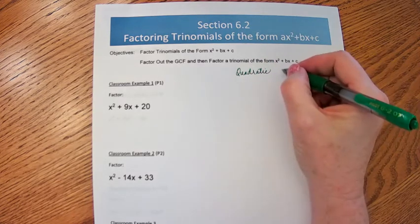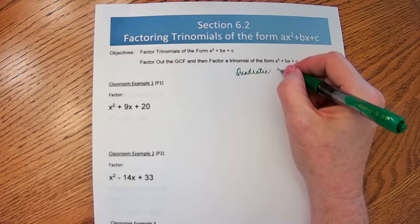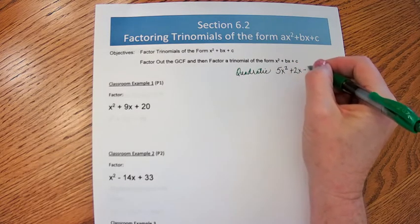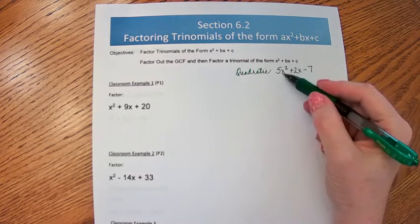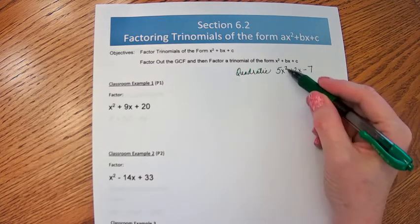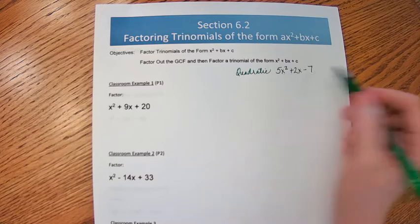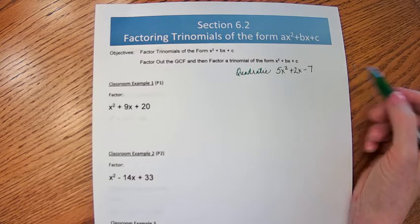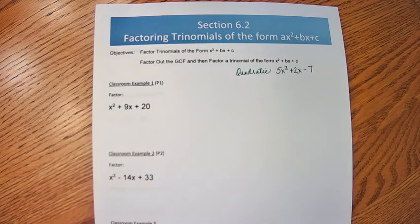A quadratic would be, an example of a quadratic would be 5x² + 2x - 7. So the degree of the polynomial is 2, and in this particular case, there are three terms.